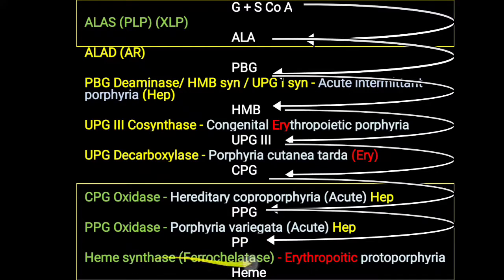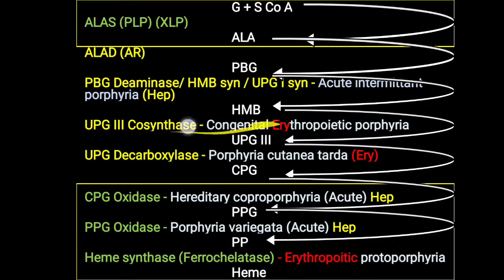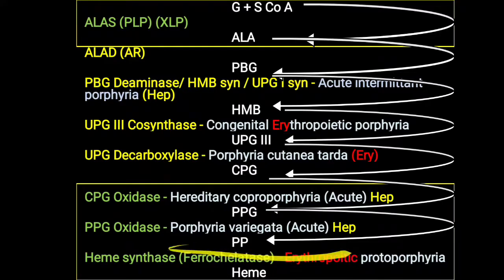You have to remember ferrochelatase or heme synthase. If that enzyme activity is deficient, it leads to EPP, erythropoietic protoporphyria. EPP is one of the erythropoietic types of porphyria. Another erythropoietic type already discussed is CEP, congenital erythropoietic porphyria. The short form of erythropoietic protoporphyria is EPP.